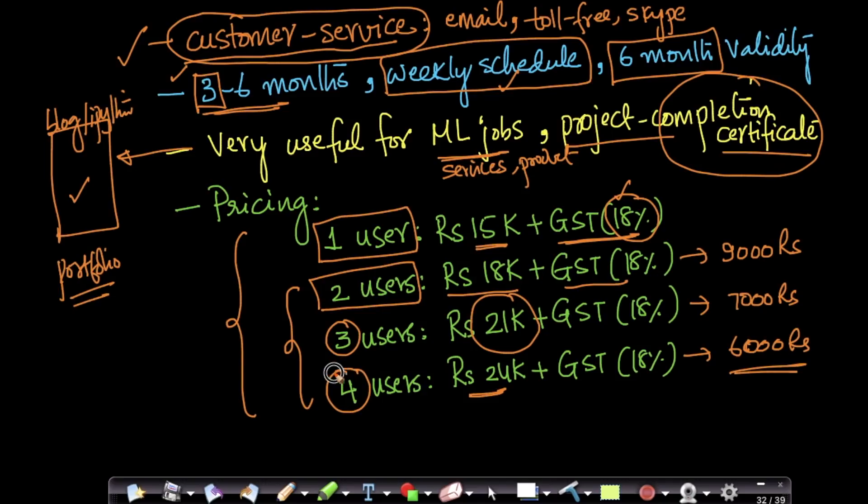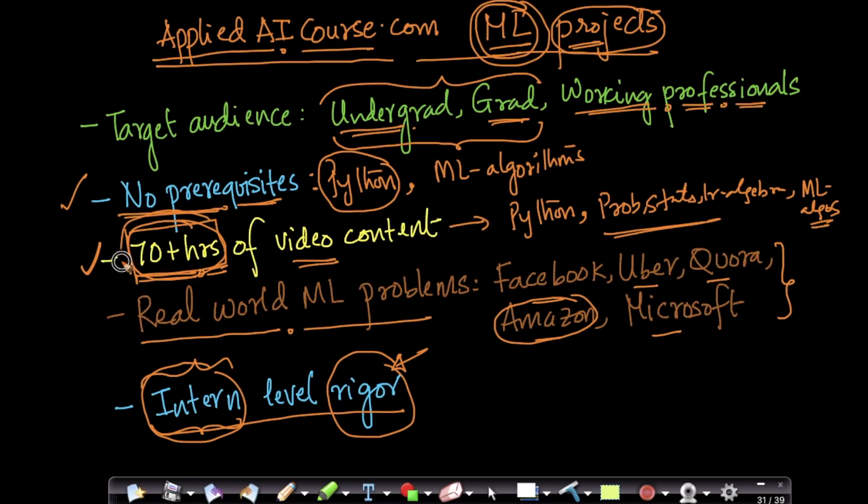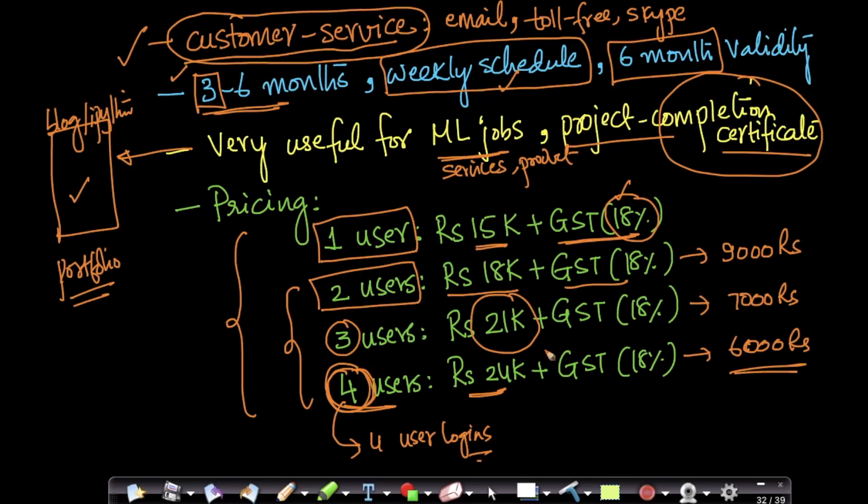Now, what do I mean when I say a group of four students? Imagine if you are a group of four students who are trying to solve a project, let's say Facebook friend recommendation project. What happens is for all the four users, you will get four user logins. So you will get four user logins and all the four users or the team of four students can simultaneously access all of our content, can simultaneously access 70 hours of content. Probably one student is seeing R2 of content, the other student could be seeing R5 of content. So you get four independent logins such that all four users can simultaneously view our content.